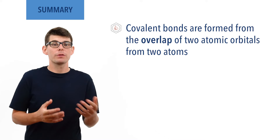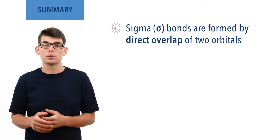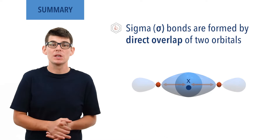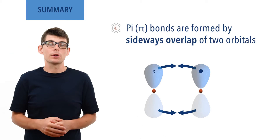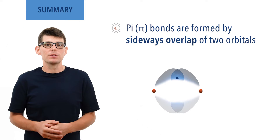To summarize: covalent bonds are formed from the overlap of two atomic orbitals from two atoms. Sigma bonds form from the direct overlap of atomic orbitals from two atoms. Electrons in the bond are close to the nuclei of both atoms, giving a high level of attraction that is hard to break, making sigma bonds strong. Sigma bonds are free to rotate. Pi bonds form from the sideways overlap or bending of P-shaped atomic orbitals from two atoms.